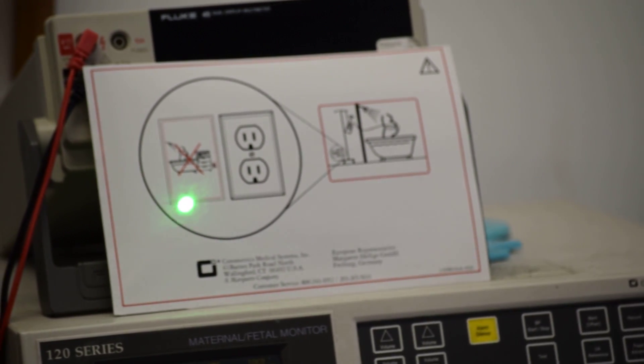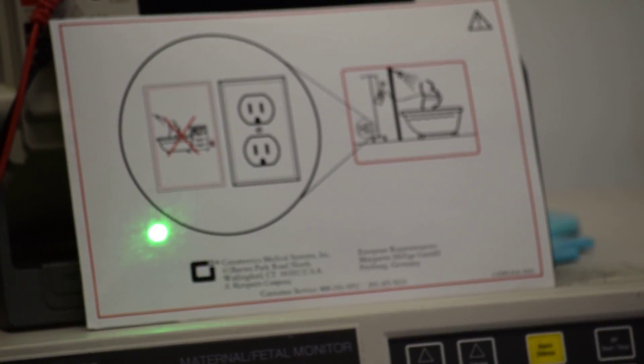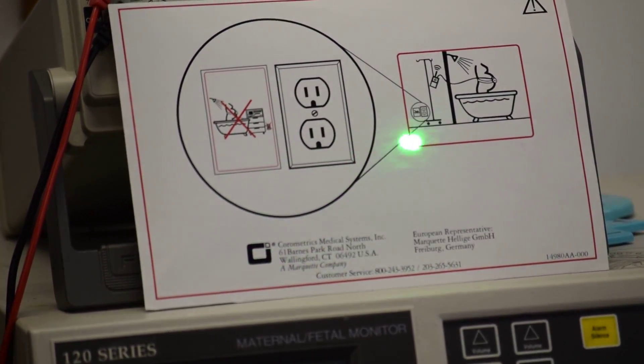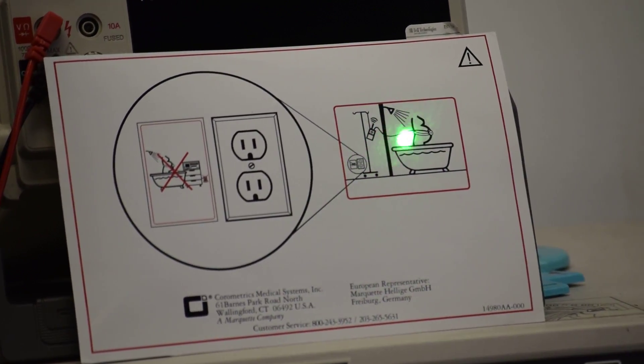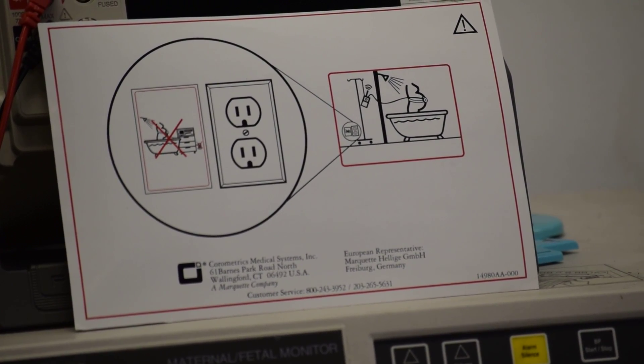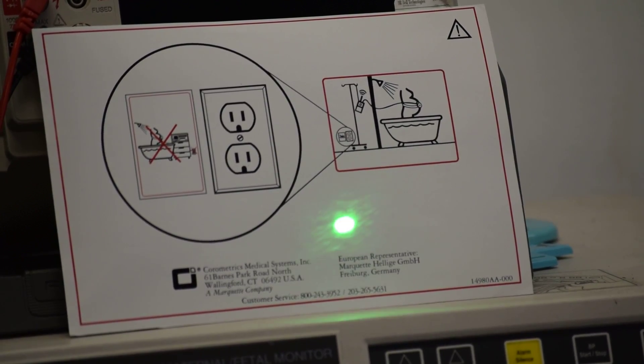On right you see a label and user manual gives the procedure as to how to use it with fetal telemetry which is battery powered. On the left side of this label again, there is a red cross mark showing that fetal monitor plugged to a wall socket is not to be used.